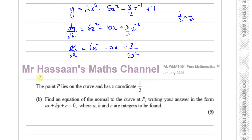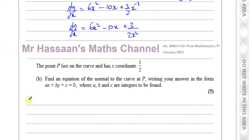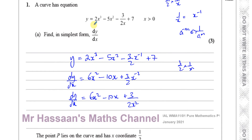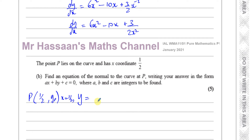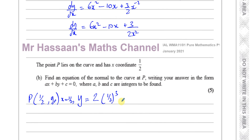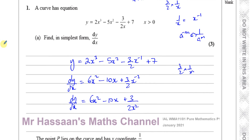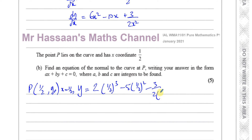Part b says the point P lies on the curve and has x-coordinate one half. P is on the curve so we need to find the y-coordinate of P by substituting x equals one half into the original equation. So y equals 2 times (1/2)³ minus 5 times (1/2)² minus 3 over 2 times (1/2) plus 7.